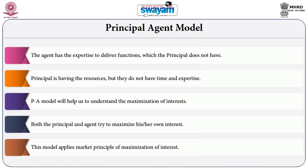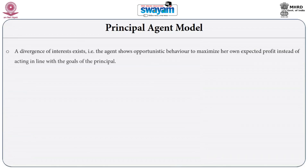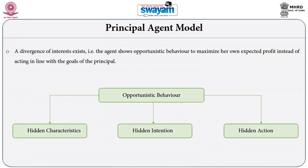This principle of the principal-agent model also applies the market principle of maximization of interest of agents or masters, providing justification and a proper understanding of the public choice approach. The limitations or gaps of the master require an agency, and the agency's advantages in the form of technology, knowledge, information, and expertise become a resource for maximizing selfish interest. Another area where literature has been developing from the public choice approach is interest groups and contribution.